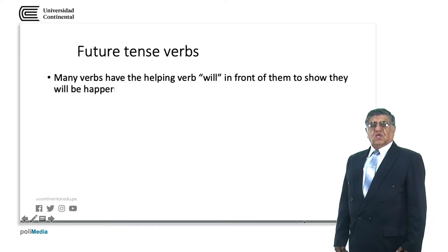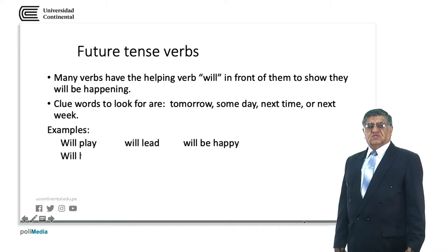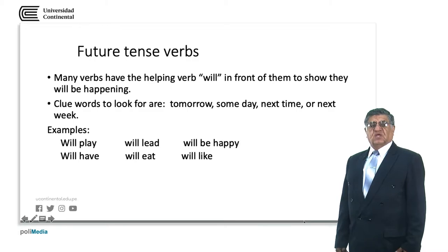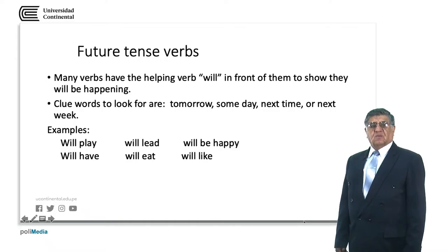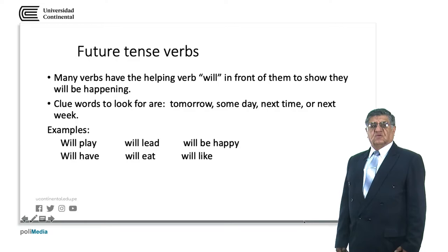In the future, we can use some forms. 'Will' is the most common and the easiest, but we also have 'to be going to' and the present progressive used to express future actions. Time words include: tomorrow, someday, next time, next week, next year, etc. Examples: 'we'll play,' 'we'll have,' 'we'll eat,' 'we'll be happy,' 'we'll like.' These use the auxiliary 'will' and the infinitive form of the verb. The sentence structure is: subject, auxiliary, infinitive, and complement.